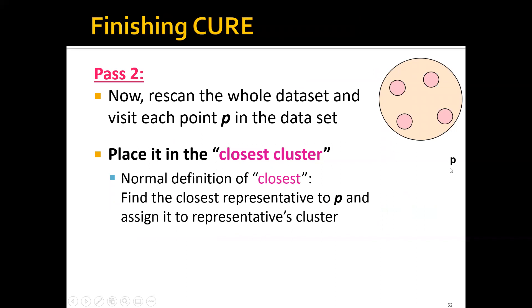Then in the second pass, we re-scan the whole dataset and visit each point P in the dataset. For each point P, we place it in the closest cluster. Normally we can define closest as finding the closest representative to P and then assigning it to that representative's cluster. For example, if P is here, then the closest representative will be this one, so P belongs to this cluster.